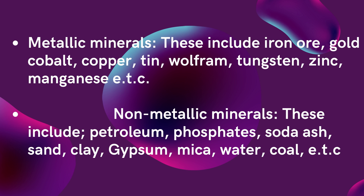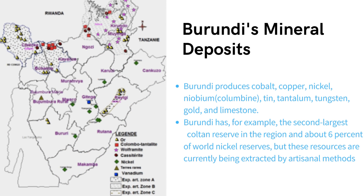Starting with Burundi — these are the different minerals found there. We have cobalt, copper, nickel, gold, and some limestone. Burundi has the second largest coltan reserve in the region and about six percent of world nickel reserves. However, these resources are currently being extracted by artisan methods — local extraction methods. So Burundi's major minerals are nickel, copper, and also niobium and coltan among others.